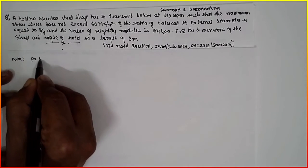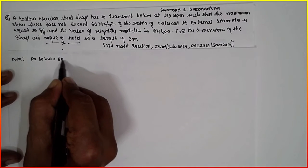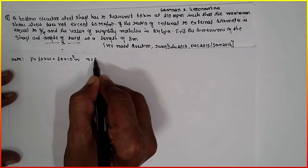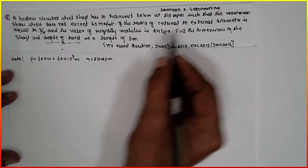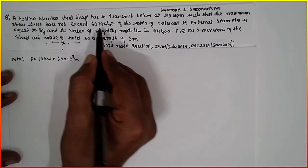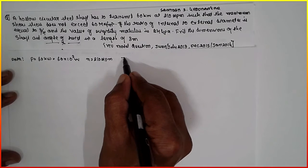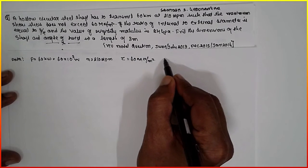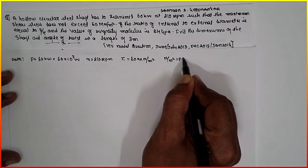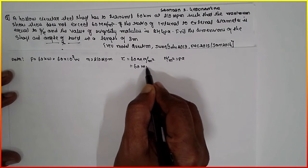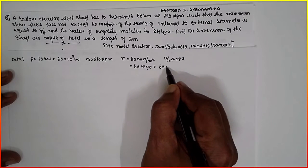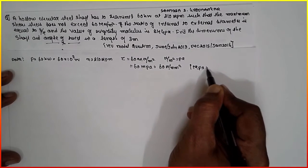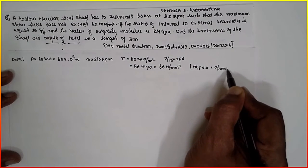Data is given here. P is equal to 60 kW, or 60 times 10 raised to 3 in terms of watts, at 210 rpm. N is given as 210 rpm. The maximum shear stress does not exceed 60 mega newton per meter square. Tau is equal to 60 mega newton per meter square, which is 60 newton per mm square, because 1 mega Pascal is 1 newton per mm square.